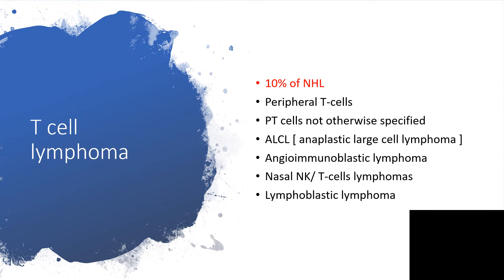T-cell lymphoma accounts for about 10 percent of non-Hodgkin lymphoma. Peripheral T-cells are involved — peripheral T-cells not otherwise specified, anaplastic large cell lymphoma, angioimmunoblastic lymphoma, nasal natural killer T-cell lymphomas, and lymphoblastic lymphoma.